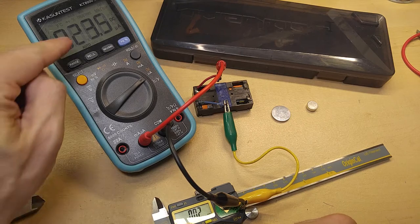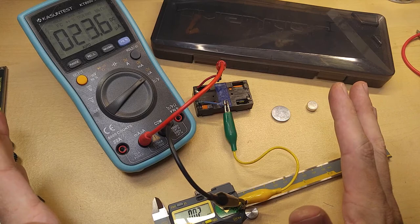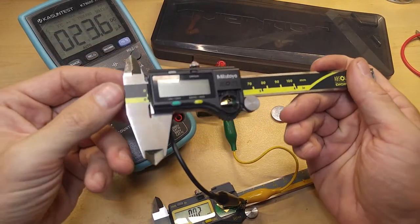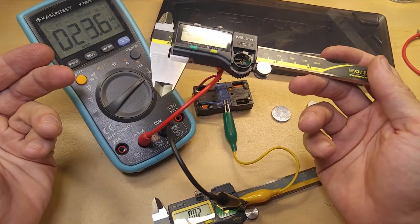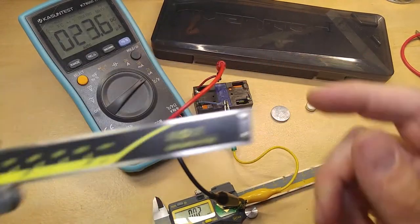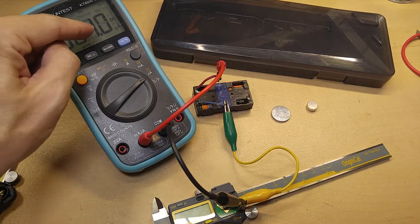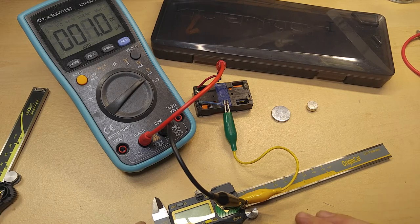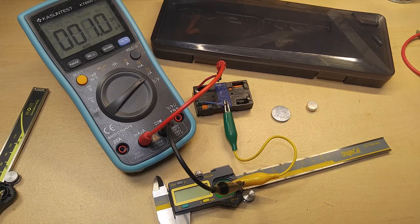But in the on state it does consume substantially more. The most important number there is the off state. The reason all these digital calipers are getting battery issues is because they're sitting there draining the battery while they are off. The iGauging here is only drawing 1 microamp of energy or 3 microwatts of energy while off which is very respectable. And that means your batteries are going to last a good long time.